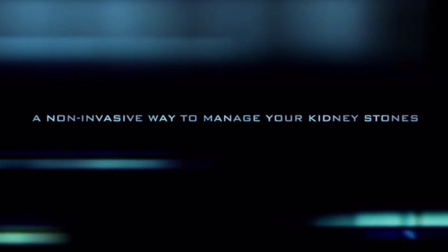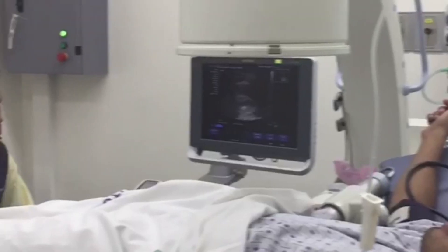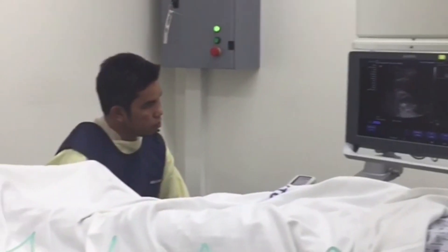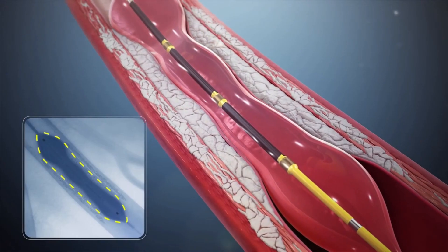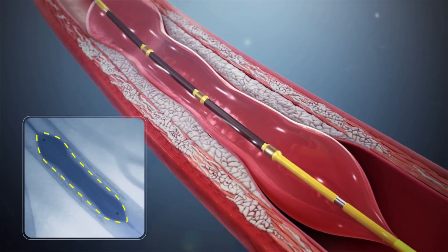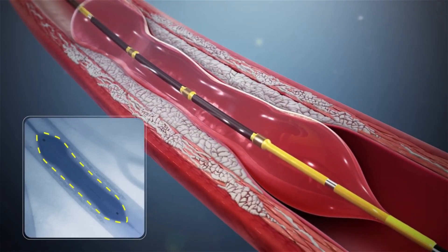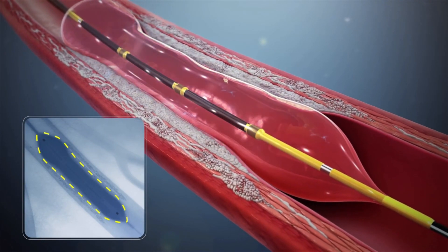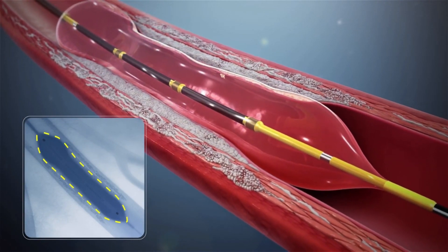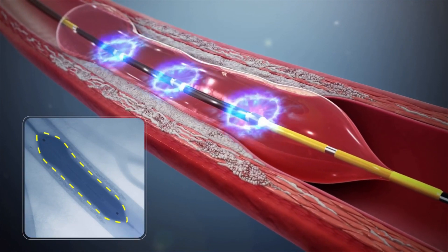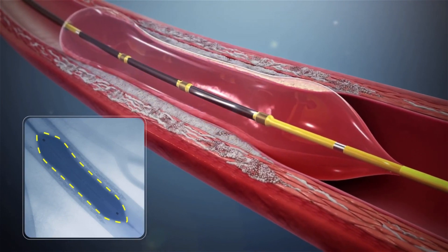If you are awake, you may feel a tapping feeling when the procedure starts. The waves break the stones into tiny pieces. The lithotripsy procedure takes about 45 minutes to one hour. A tube called a stent may be placed through your back or bladder into your kidney to drain urine until all the small stone pieces pass out of your body. This may be done before or after your lithotripsy treatment.